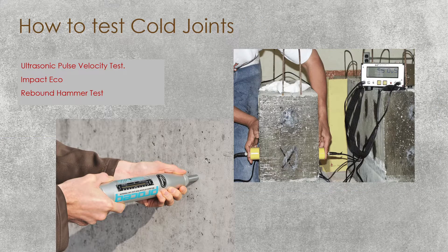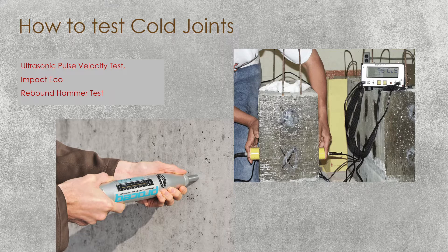Now let's discuss the testing procedure for Cold Joints — how do we check them? There are 3 types of tests: Ultrasonic Pulse Velocity test, Impact Echo, and Rebound Hammer test. The Ultrasonic Pulse Velocity test is an indicator of concrete quality — depending on the speed or velocity of the wave traveling through the concrete, we can judge the quality and condition of the concrete. The Rebound Hammer test is used to find the strength of the concrete.